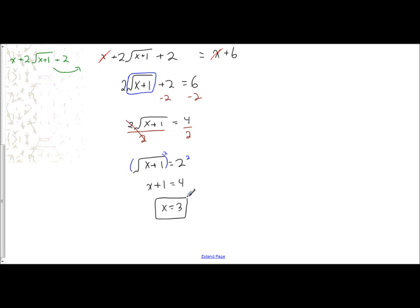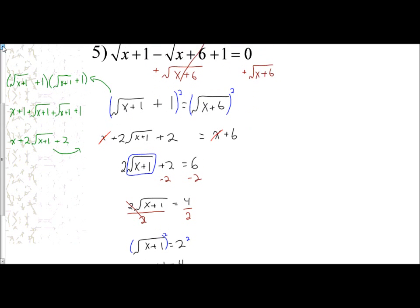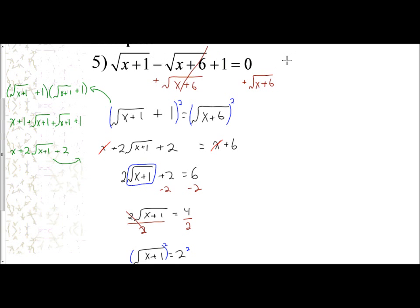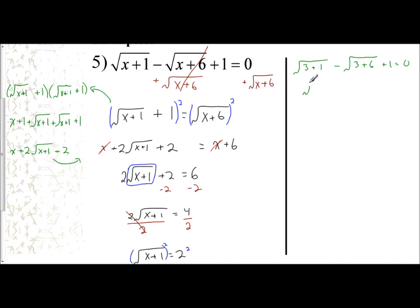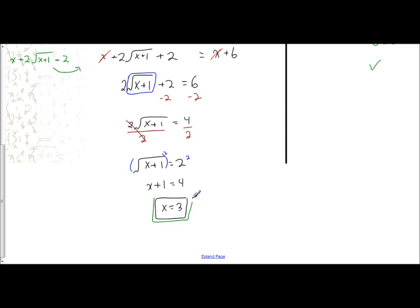That is the answer I have at this moment, but I need to go back and check my answer in case it is an extraneous solution. I'm going to plug in three. I have the square root of three plus one, minus the square root of three plus six, plus one, which should give zero. Three plus one is four, so I have the square root of four, which is two. Three plus six is nine, so the square root of nine is three. Two minus three plus one equals zero — that is true because two minus three is negative one, plus one is zero. So x equals three is a valid solution.